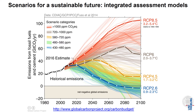Integrated assessment models are the most important test field that we have. These models produce scenarios for climate change mitigation, and the main outcome is what we call the scenario trumpet that you see here in this graph, where each of the many lines represents a single scenario with a specific technology mix, carbon tax, and other political instruments.